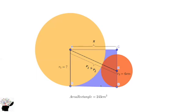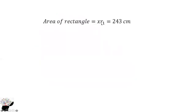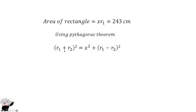We are going to use the area of the rectangle and also Pythagoras' theorem to solve this question. r1 minus r2 is the distance CK. The area of the rectangle is x times r1, which equals 243. Then, using Pythagoras' theorem: (r1 + r2)² = x² + (r1 − r2)².